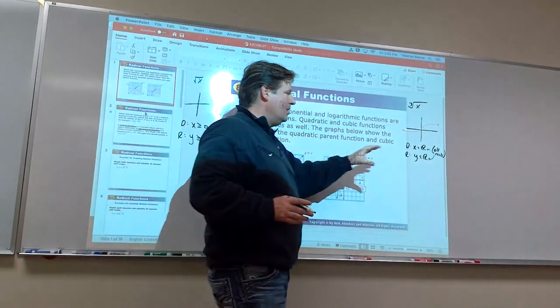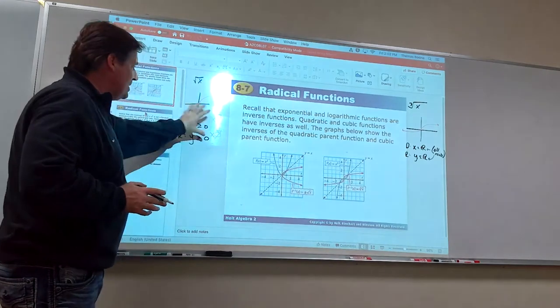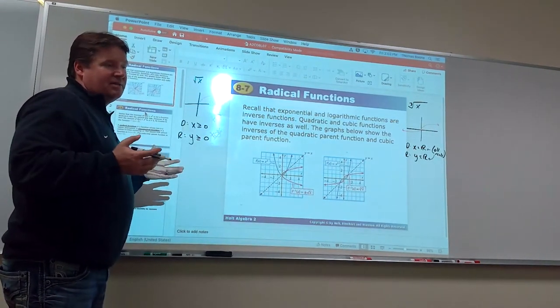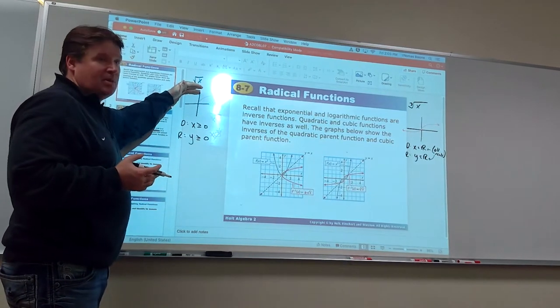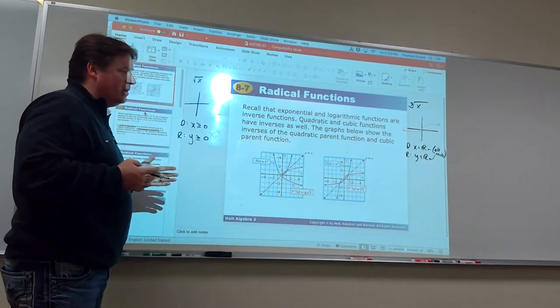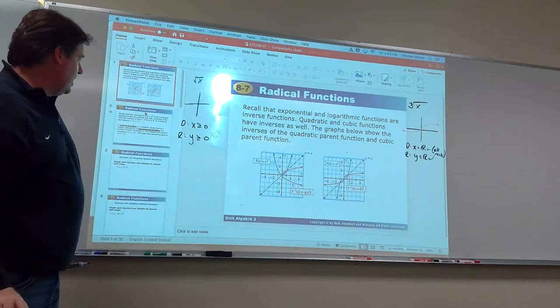So, whenever you see a cube root, domain and range are always going to be all reals. Now, it depends on what happens to the square root of x graph. That's going to determine what the domain and range are. If we move it up, obviously, we're going to change the range. If we move it left or right, we're going to change the domain just a little bit as we do that. So, be aware of that.